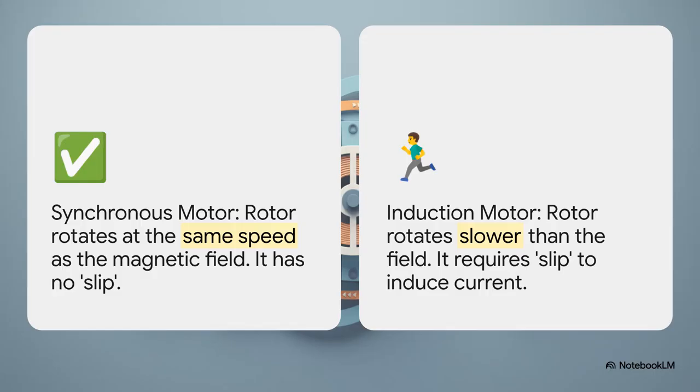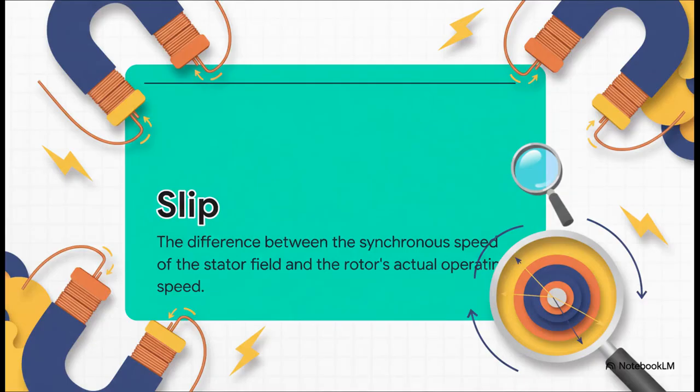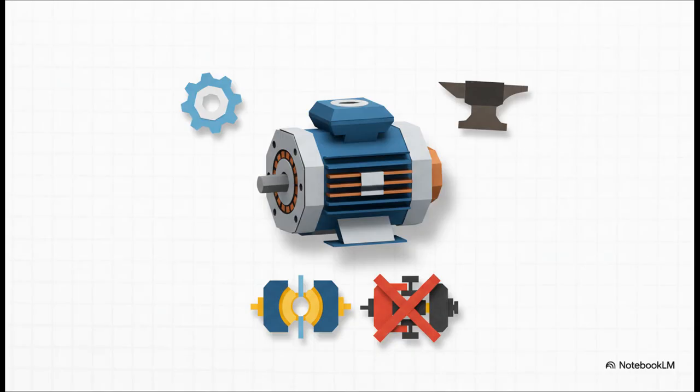Okay, but what about the most common type, the induction motor? The big difference here is slip. With these, you don't power the rotor directly. Instead, the stator's field creates a current in it. This makes the rotor chase the stator's field, but it never quite catches up. That lag, that slip. The genius of this design is its simplicity. It makes these motors incredibly rugged and reliable.